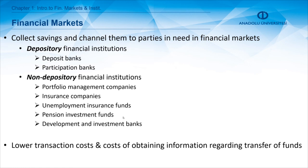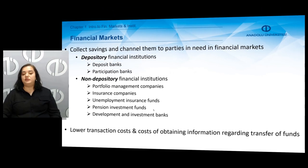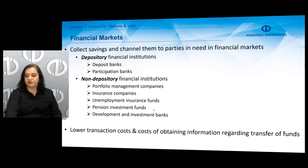Depository financial institutions create money. Thanks to financial institutions, we can have lower transaction costs because they have a lower cost of obtaining information compared to direct financing — due to advantages such as economies of scale. They have lower costs of obtaining information and therefore can offer lower transaction costs. That was the summary of chapter one.